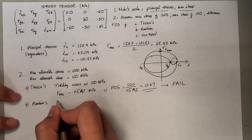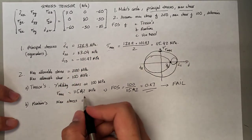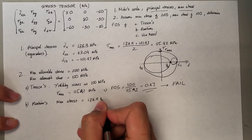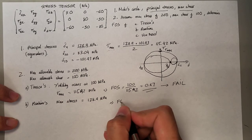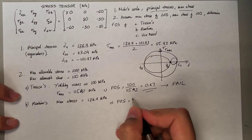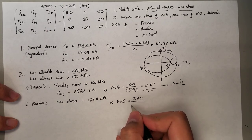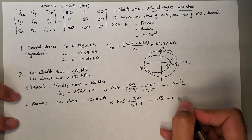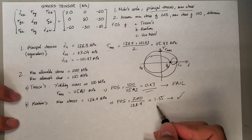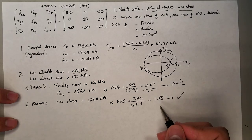For the Rankine formulation, you use the maximum principal stress. The maximum principal stress is 128.9 MPa, and the maximum allowable stress is 200 MPa. The factor of safety is 200 divided by 128.9, which turns out to be 1.55. This does not fail, which is good — a factor of safety greater than 1.5 is what we should expect when designing a structure.